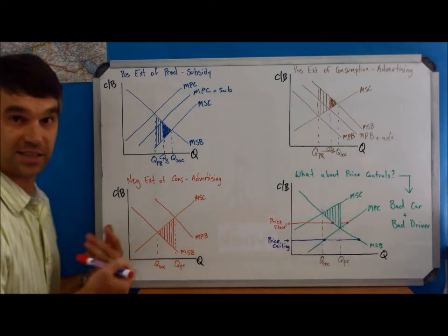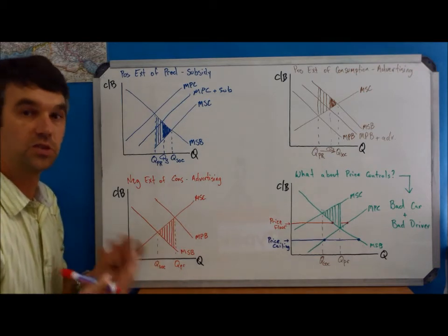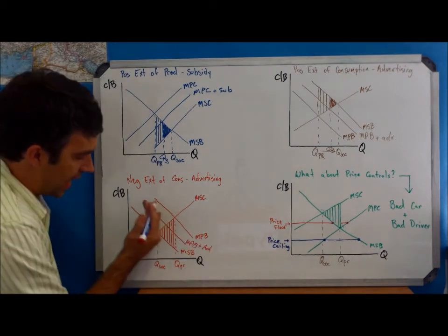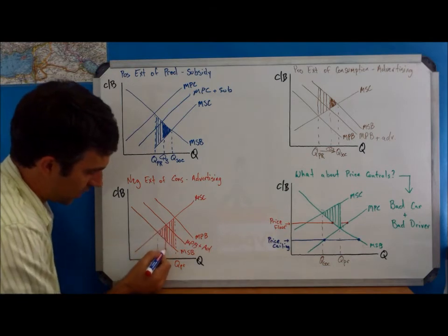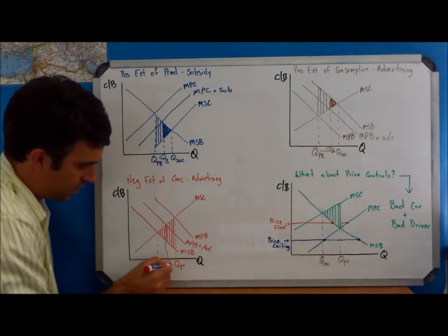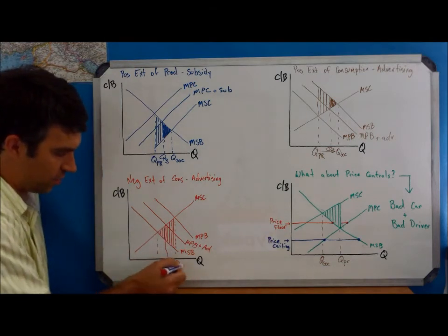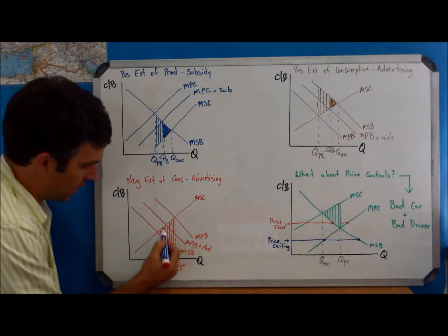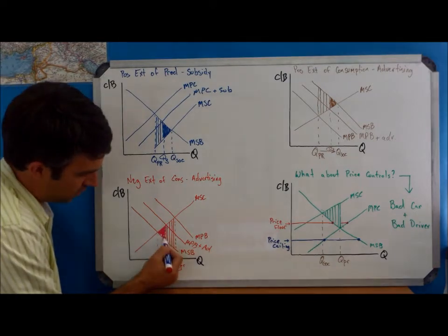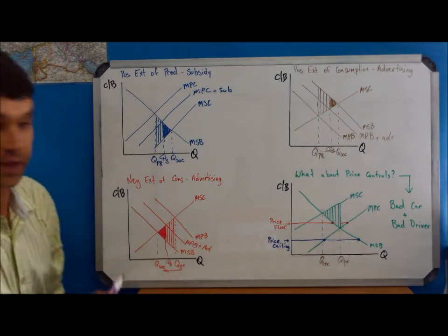Anyhow, that advertising is telling you not to do something. So it's negative advertising. And as it shifts to the left, we're going to get a new quantity here. So we see quantity private moving closer to quantity social and the amount of the welfare loss is again reduced.